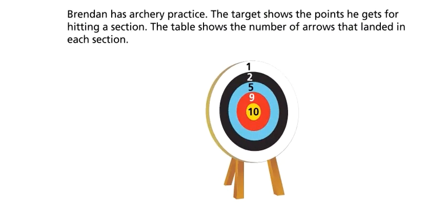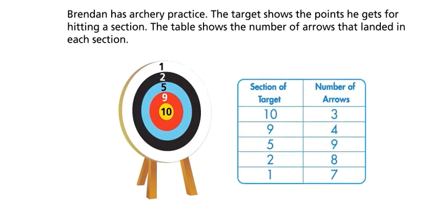Brendan has archery practice. The target shows the points he gets for hitting a section. The table shows the number of arrows that landed in each section.